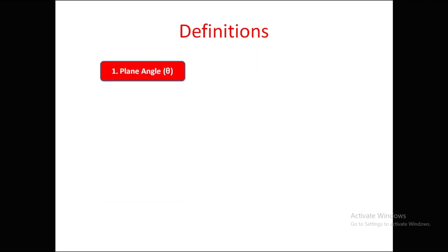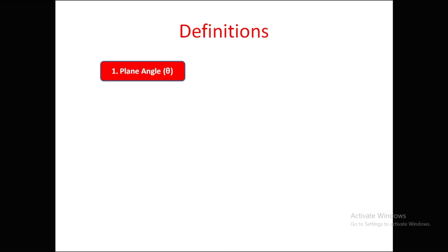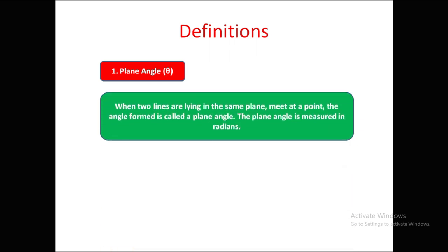The first definition is plane angle theta. When two lines lying in the same plane meet at a point, the angle formed is called a plane angle. The angle is measured in radians.